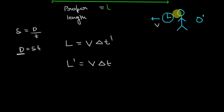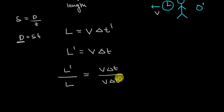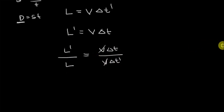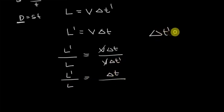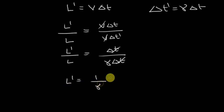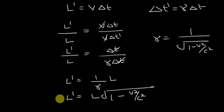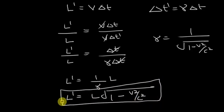Now we simply divide these two equations: L dash divided by L equals V·delta t divided by V·delta t dash. V cancels, so L dash over L equals delta t over delta t dash. We know from the time dilation formula that delta t dash equals gamma times delta t. Substituting that in: L dash over L equals delta t over gamma·delta t. The delta t cancels, giving us L dash equals L over gamma, which is L times 1 upon gamma.